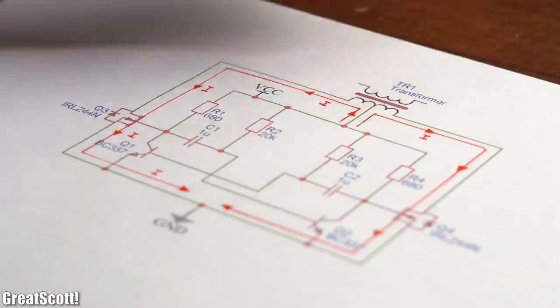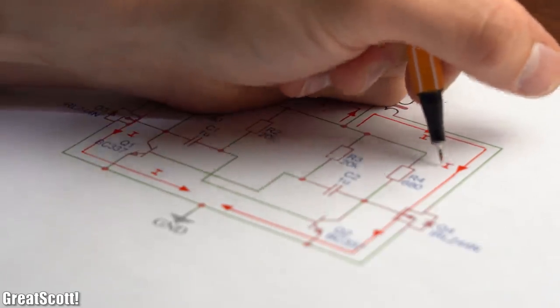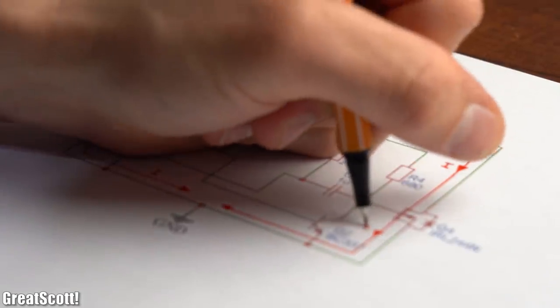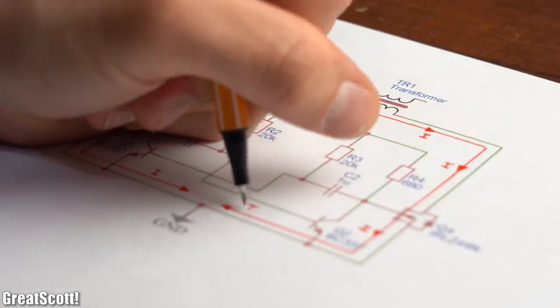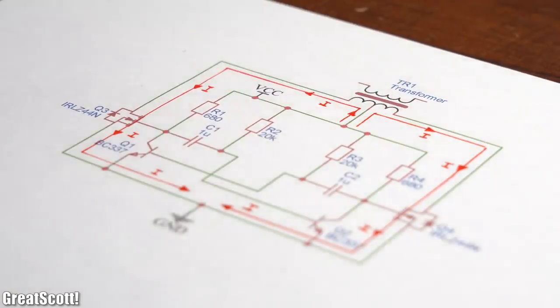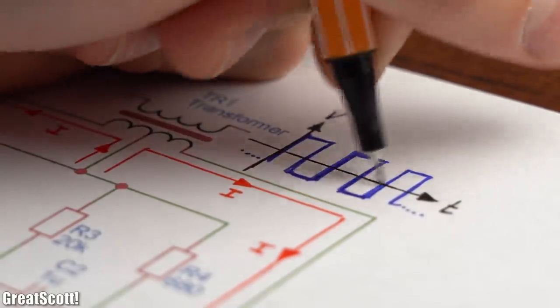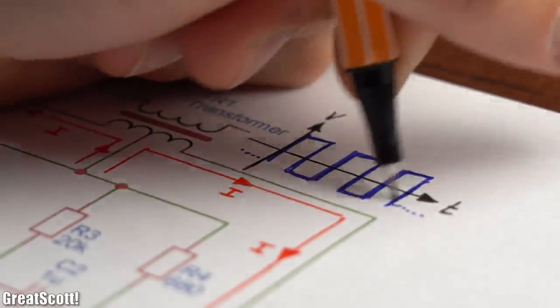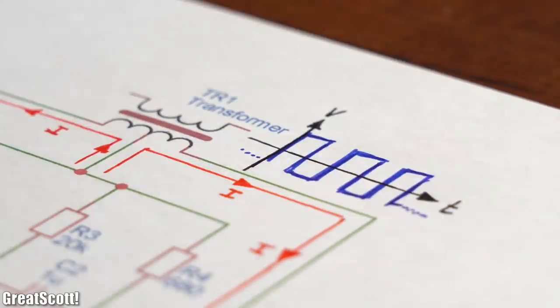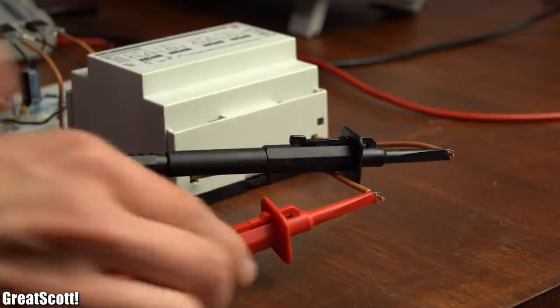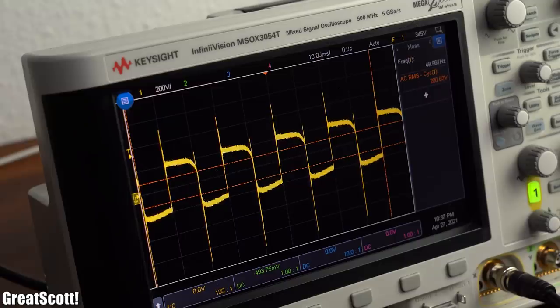Last but not least, we got the two MOSFETs which with the frequency of 50Hz pull current alternately through the low voltage transformer winding, which therefore should create a higher AC voltage with the same waveform on the high voltage side of the transformer. And according to the oscilloscope, it does just that. So overall, the circuit works.